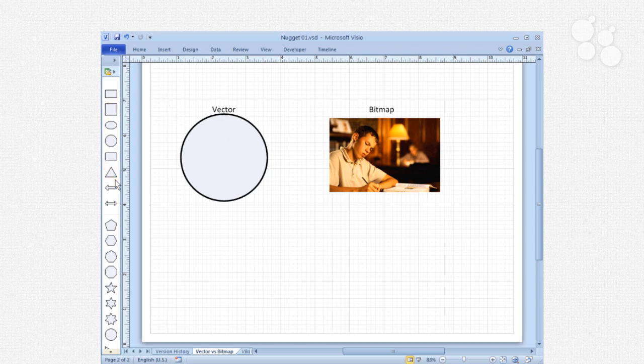All of the shapes that we have available to us in Visio stencils are vector images, and what that means is they're composed of lines. You could look at vector graphics as being considered line drawings.